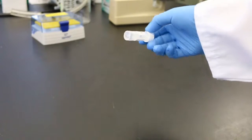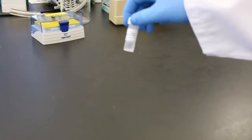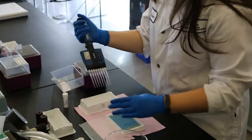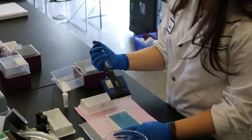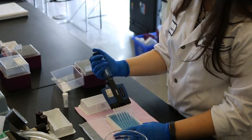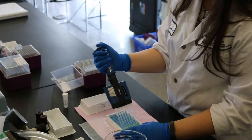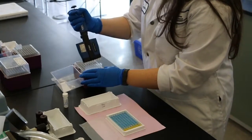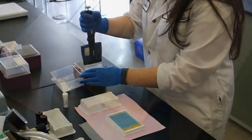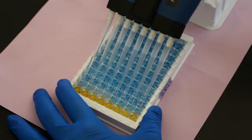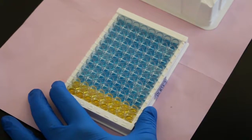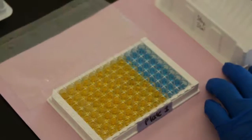The stop solution is inverted several times and poured into a clean tray. 50 microliters of stop solution is added to all of the wells using a multi-channel pipette. Upon addition, the stop solution will tint the wells yellow. The samples containing higher levels of toxins will again appear clear, and the samples with the lower levels of toxins will be tinted a brighter yellow.